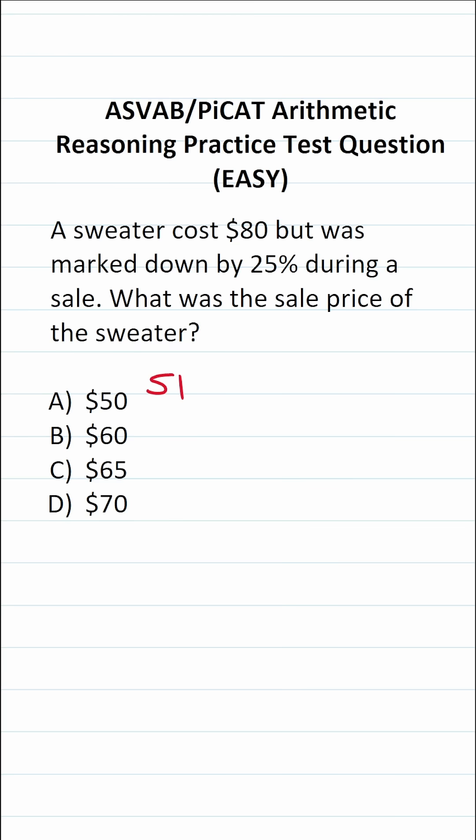To calculate the sale price of the sweater, we're going to take its original price and from that subtract the original price times the discount amount. In this case, we know the sweater originally cost $80.